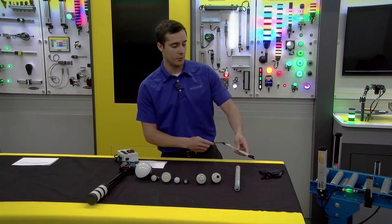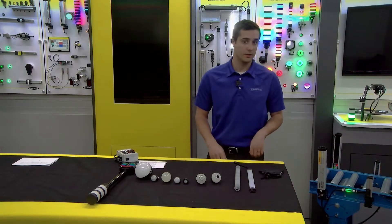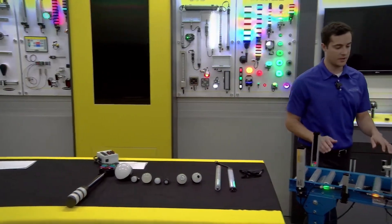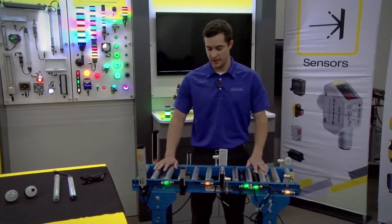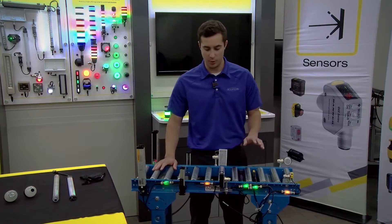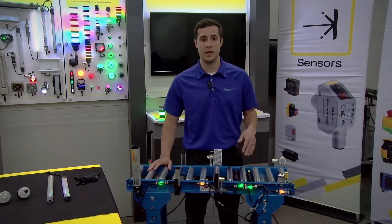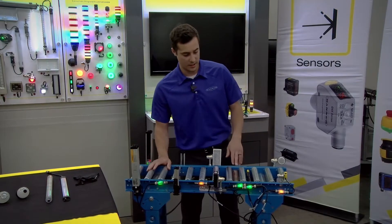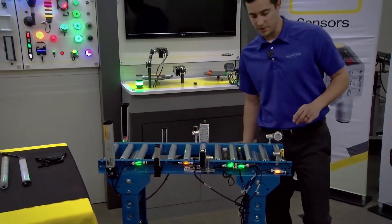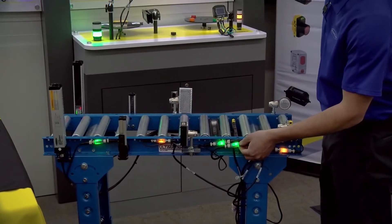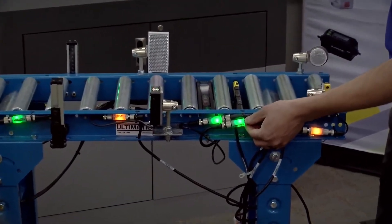With that I'm going to move over to our conveyor setup that we have here. And as you can see there are many different types of both photoelectric sensors and array type sensors here. And the item that I'm interested in showing you is actually the little indicators that are connected to these sensors.